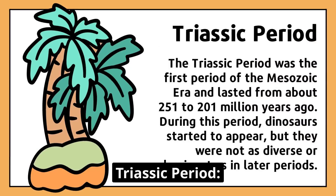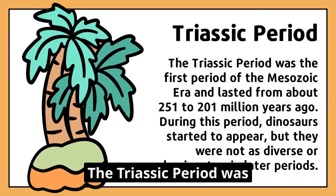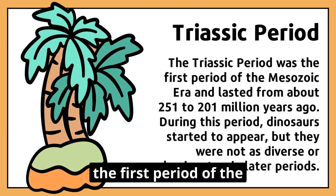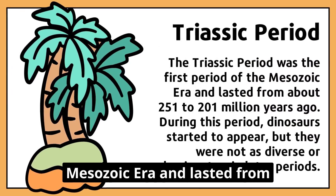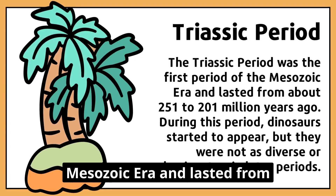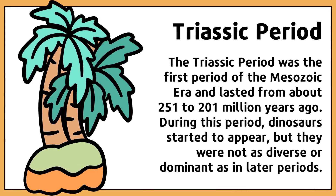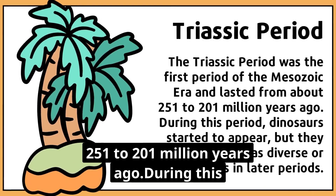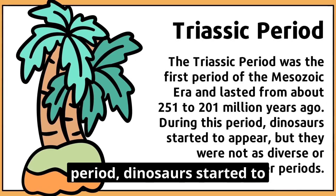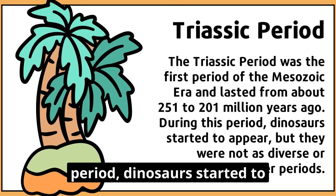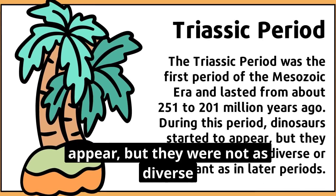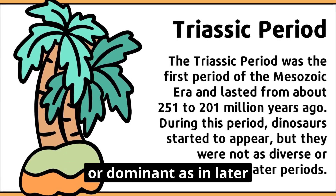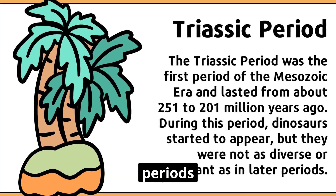The Triassic Period was the first period of the Mesozoic Era and lasted from about 251 to 201 million years ago. During this period, dinosaurs started to appear, but they were not as diverse or dominant as in later periods.